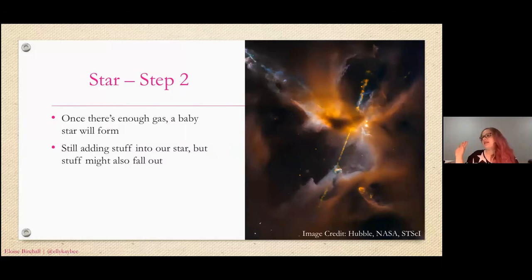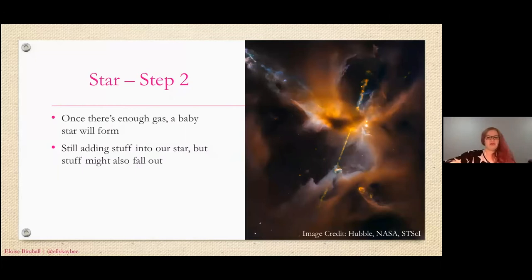You can see the sort of brown areas on this image — this is a real image of a baby star. And there are these yellow things pointing outwards from it — those yellow bits are where the star is just being like 'nah, I don't want it' and thrown it out. This takes around 100,000 years to get to this stage. This is my favorite stage of star formation because it's the stage that I work on.